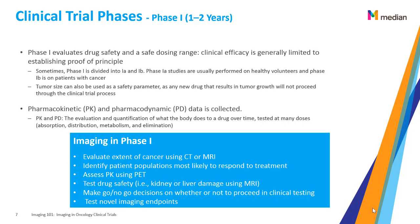Phase 1 lasts 1 to 2 years and evaluates drug safety and a safe dosing range. Clinical efficacy is generally limited to establishing proof of principle. Sometimes Phase 1 is divided into 1a and 1b. Phase 1a studies are usually performed on healthy volunteers, and Phase 1b is on patients with cancer. Tumor size can also be used as a safety parameter, as any new drug that results in tumor growth will not proceed through the clinical trial process.